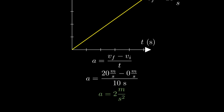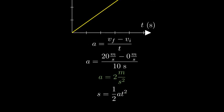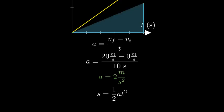Now let's find the distance traveled. For uniform acceleration from rest, we can use the formula: distance equals one half times acceleration times time squared. This formula comes from the area under the velocity time graph, which represents the total distance traveled.